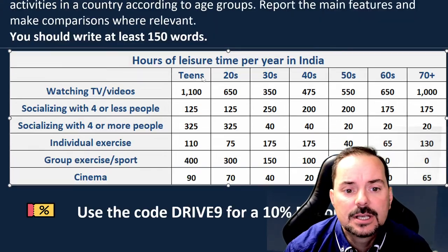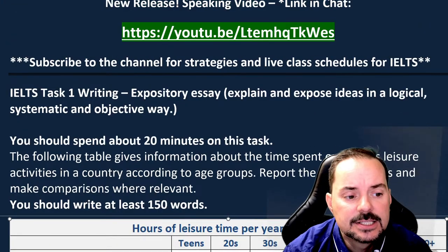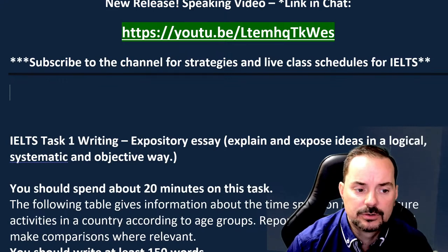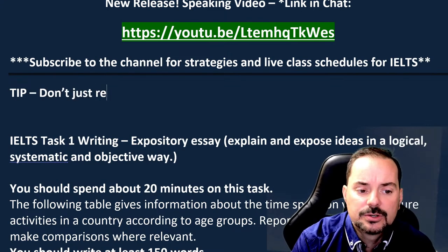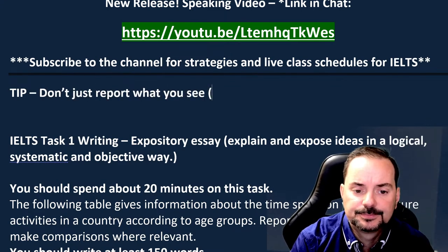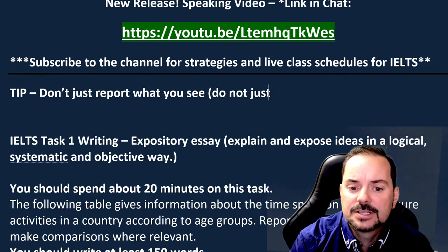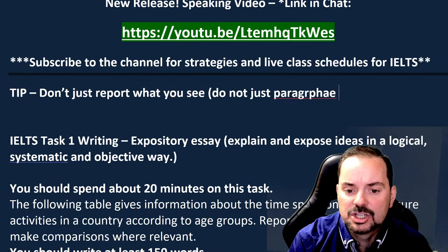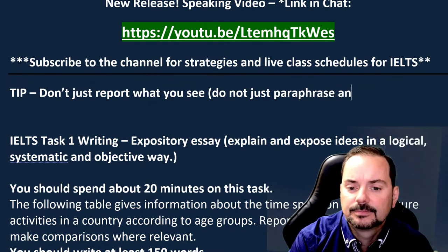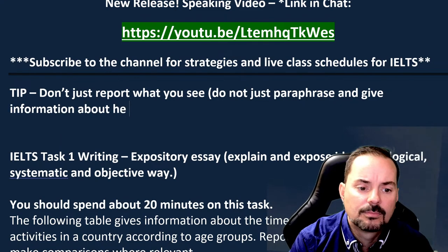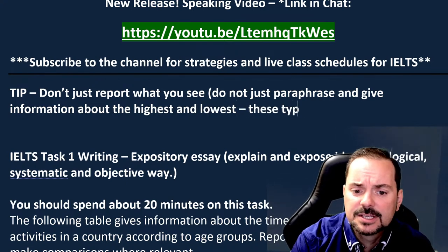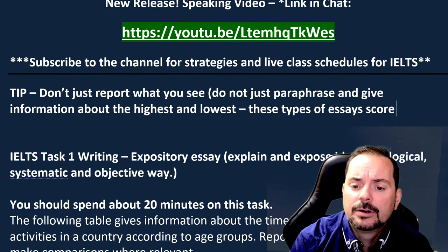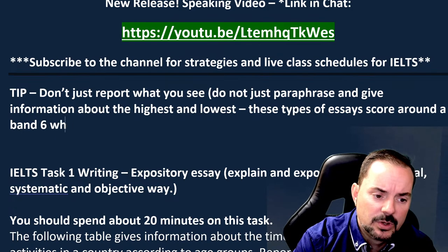One of the common mistakes in the IELTS that gets low scores is when candidates simply just report. Don't just report what you see. Do not just paraphrase and give information about the highest and lowest. These types of essays score around a band six when they are well written.